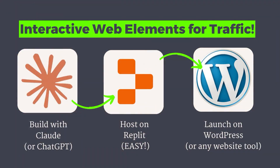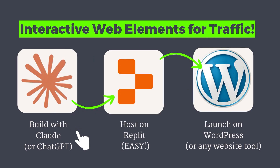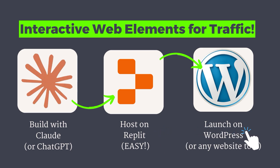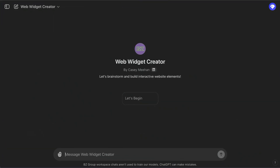Here is the big picture of what we are going to cover today. First, we are going to brainstorm with AI using some prompts to get your mind wrapped around some great ideas for these website widgets. Then I'm going to show you how to use AI to create these widgets — primarily Claude, but I'll also show a few things we can do with ChatGPT. I'm going to show you how to deploy it on Replit and then launch it onto WordPress. You don't need to know any code. I'm also going to get into ideas for how you can share it — SEO optimization, social sharing, monetization, and more. And stay tuned, at the end of the video I'm going to show you a custom GPT I've created that will walk through all these steps automatically.